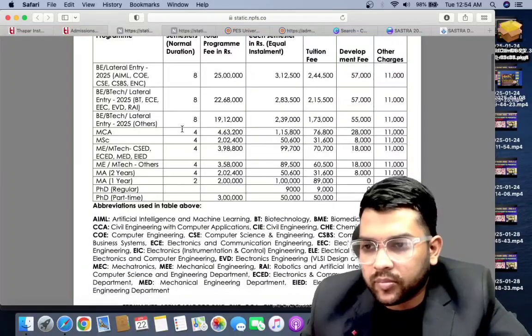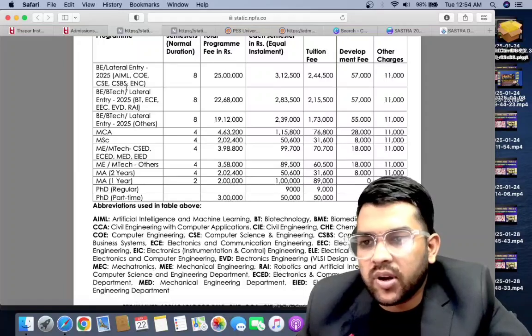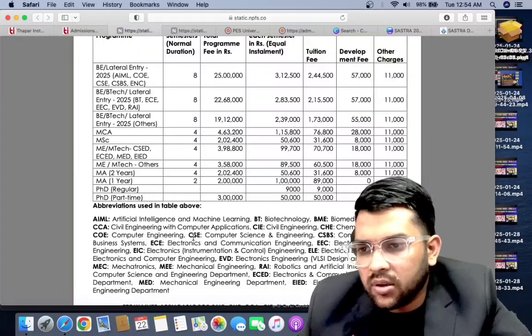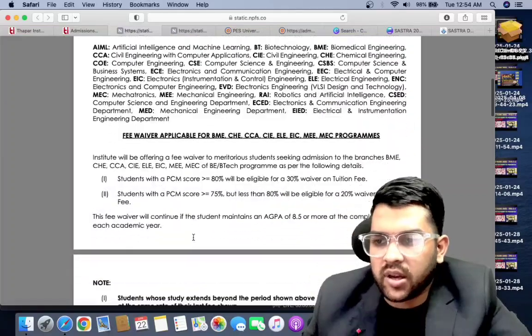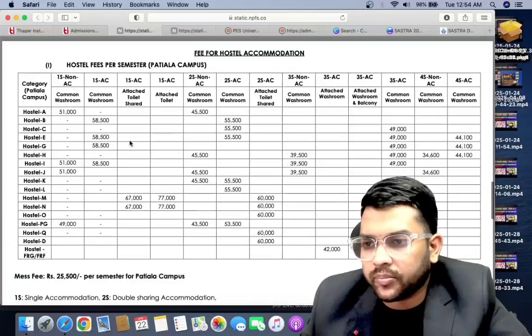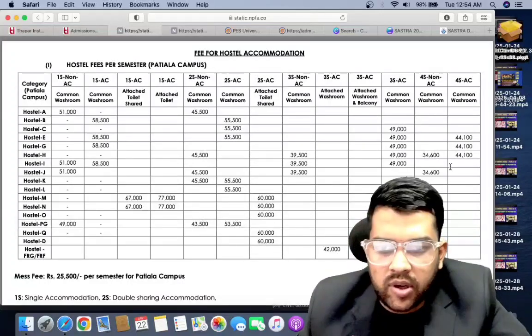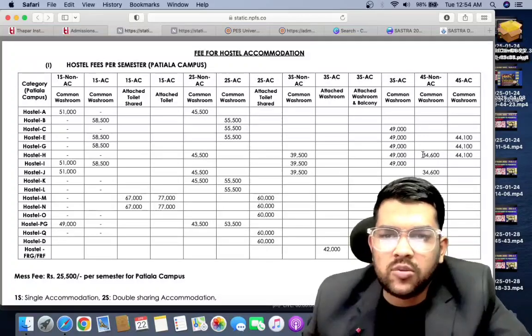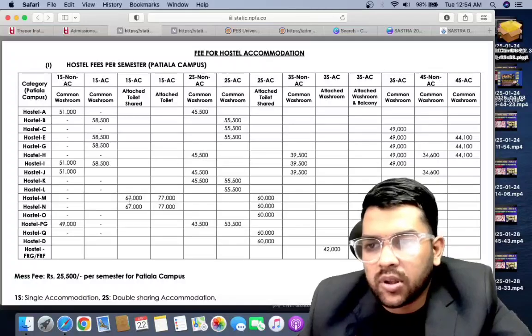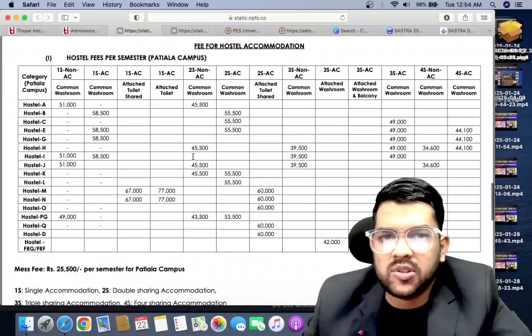Once you get the seat you have to pay this fee to accept the seat. You can check here for different branches, different fees. Some less fees for EC branch and others. I will also provide you the information regarding hostel fee. You can check 51,000, 58,000, 44,000, 34,000 - total fee starting from 34 up to 51,000 per semester for six months.